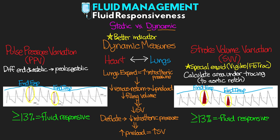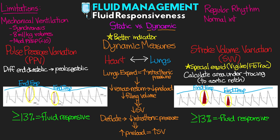These dynamic measures are actually good indicators of fluid responsiveness, but unfortunately we do have some limitations. They only hold true in certain situations: the patient must be mechanically ventilated on positive pressure ventilation and synchronous with that ventilation, receiving 8 mL per kilogram tidal volumes, with a moderate amount of PEEP — less than 10. Additionally, they must have a regular rhythm, normal intra-abdominal pressure, and normal thoracic compliance. If all of this isn't true, we really can't rely on these measures. For a patient who is awake and spontaneously breathing, these measures will be of no value.